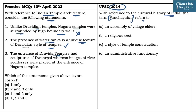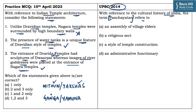The third statement says the entrance of Dravidian temples had sculptures of Dwarpal, whereas images of river goddesses were placed at the entrance of Nagara temples. This is also correct — in Dravidian temples the entrance of Garbhagriha had sculptures of Dwarpal, Mithun and Yakshas, while images of river goddesses Ganga and Yamuna were placed at the entrance of Nagara temples. The correct answer is B (2 and 3 only). The term Panchayatan refers to a style of temple construction, so the answer to that question is C.